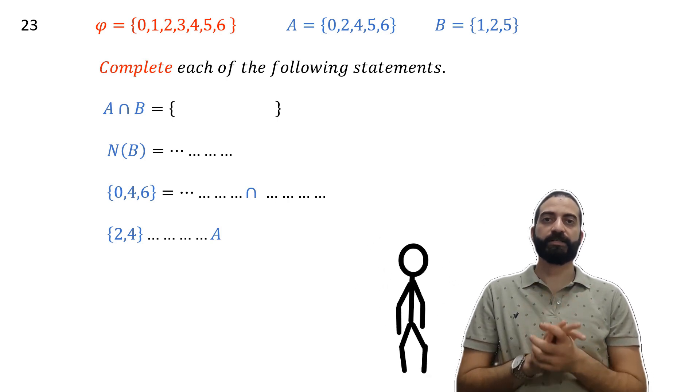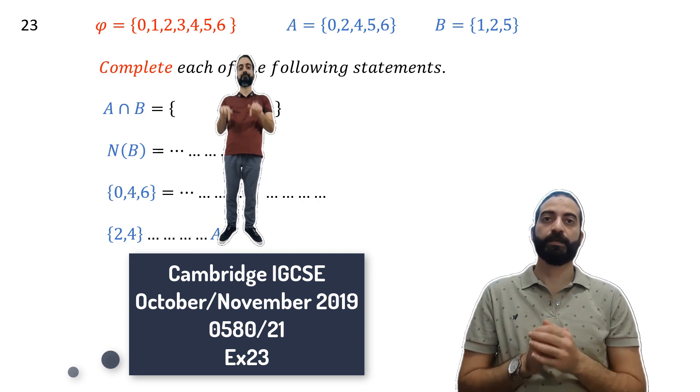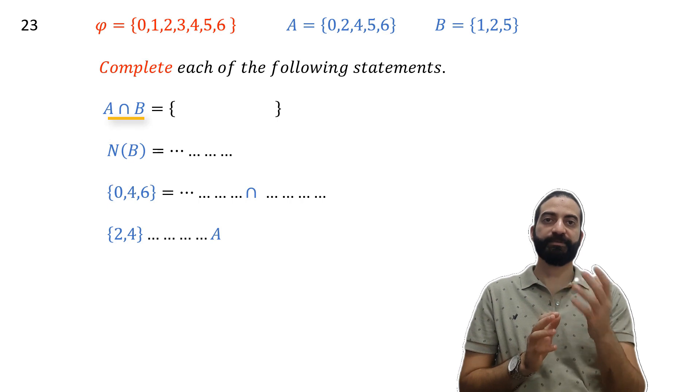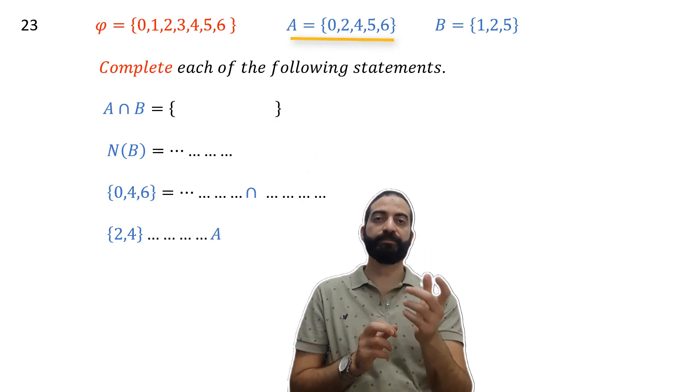Hello everyone, we'll start by solving question 23 of the Cambridge IGCSE 2019 exam. Complete each of the following statements: A ∩ B. That is, we must find the intersection between A and B.